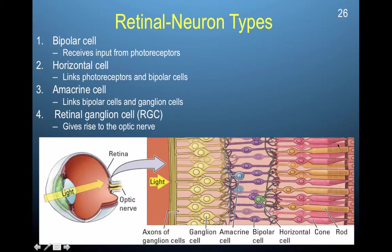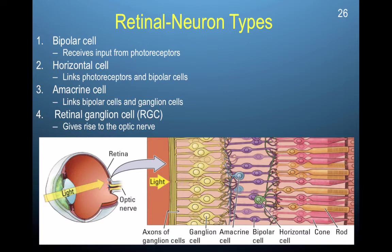Our retina is comprised of photoreceptor cells, and then a series of cells that begin to connect those photoreceptors. Bipolar cells receive input from the photoreceptor cells. Horizontal cells link the photoreceptors and bipolar cells. So already, even at this point in the retina, visual information is starting to be combined across receptors so that it can be transferred for greater processing to the brain.